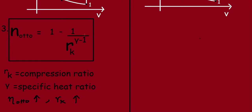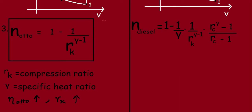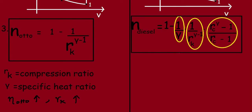Now for the diesel cycle, the efficiency is: η_diesel = 1 − (1/γ) × (1/Rk^(γ−1)) × (Rc^γ − 1)/(Rc − 1). Here Rk is still the compression ratio, γ is still the specific heat ratio, and Rc is a new term — the cutoff ratio.